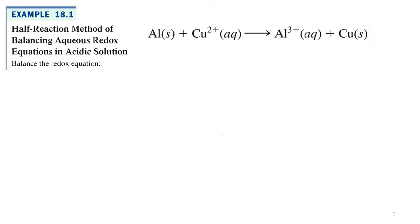Alright, so we'll start off with a straightforward one. In general chemistry one, if I asked you to balance this equation, you'd say it's balanced. Aluminum plus copper produces aluminum plus copper. One aluminum on each side, one copper on both sides. You would think this is balanced.